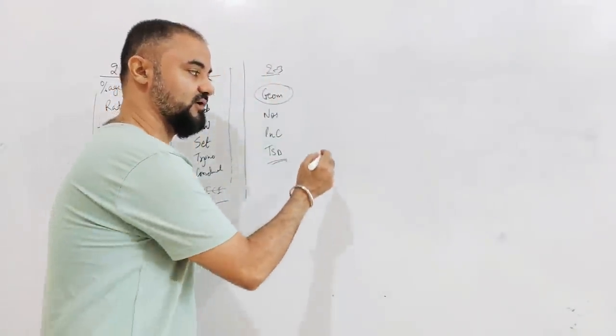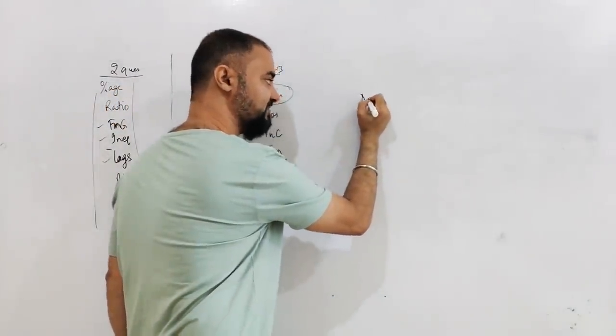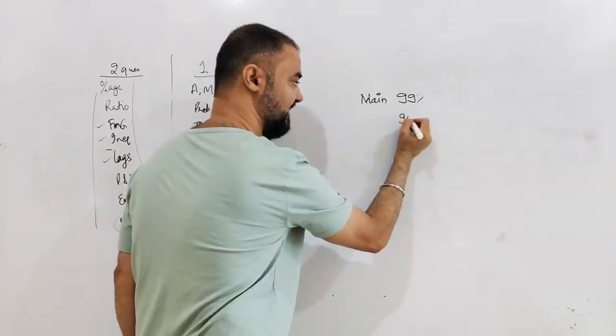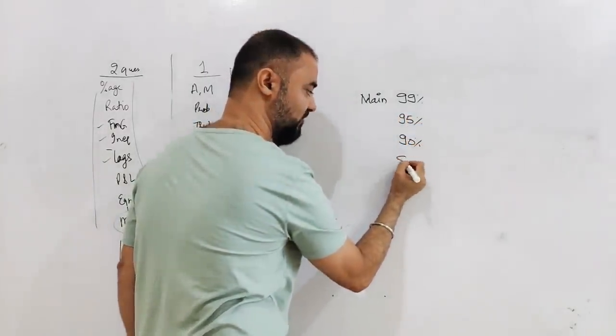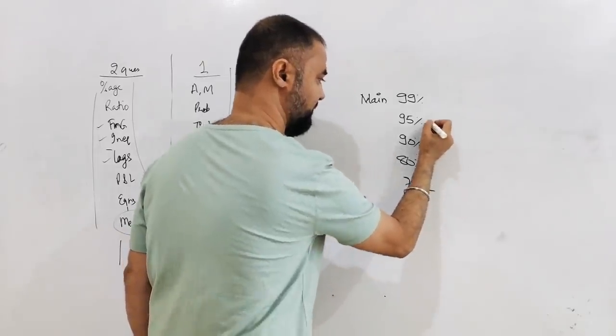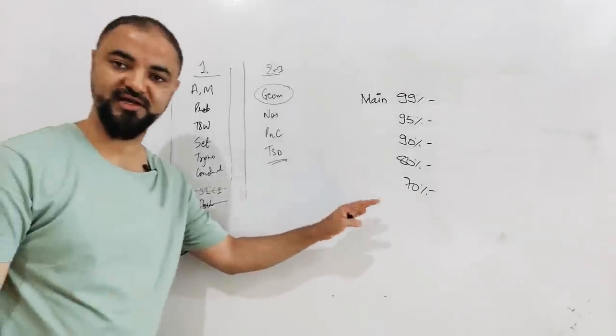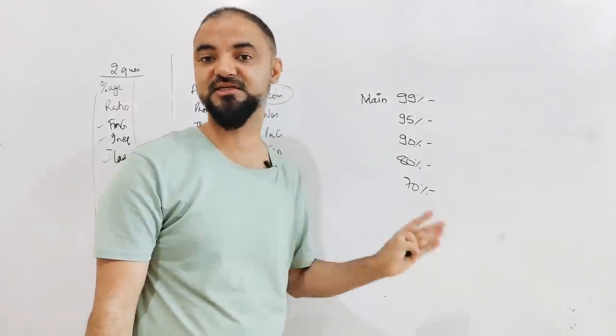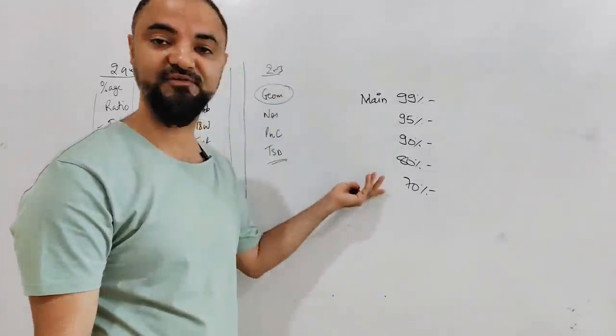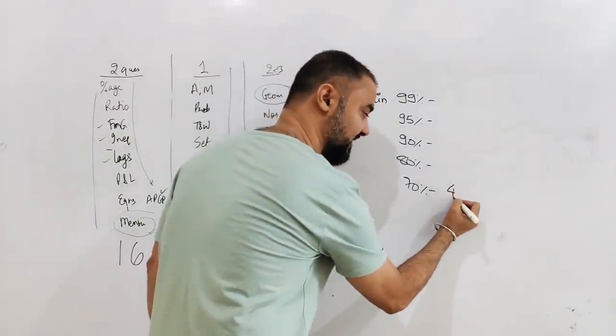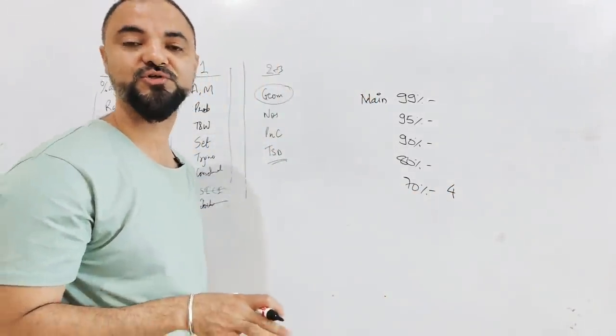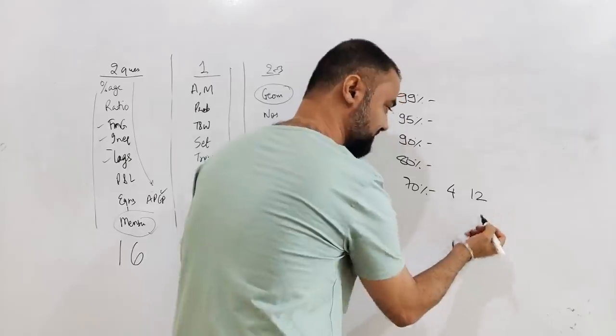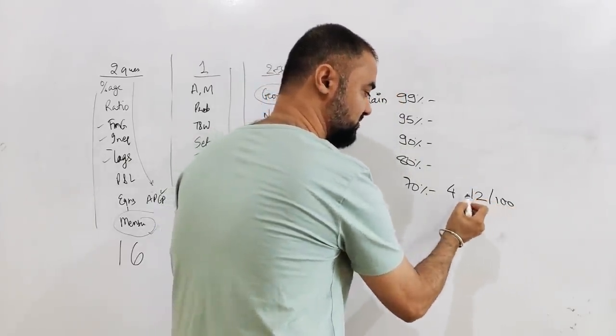Now comes the second part: the cutoff. If you're targeting the main IIMs, there are three targets you can have: you can target 99 percentile, you can target 95 percentile, 90 percentile, or worst case 80 percentile. There are five kinds of cutoff you can have. For those from the reserved category - OBC, SC, ST - if you clear 70 percentile, just clear the sectional cutoff, you are getting IIM calls for sure. So 70 percentile is the cutoff for that. The number of questions correct is only four questions correct. Get me four questions correct, you're getting a call from IIMs. Getting an IIM call, which is around 12 marks - get 12 marks out of 100, cross 12 marks out of 100, you get a call.